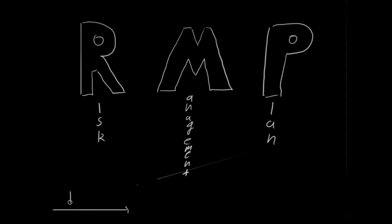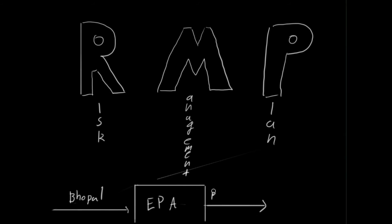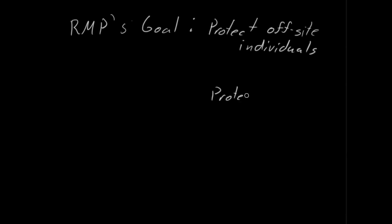The Risk Management Plan, or RMP, is the final rule published by the EPA. Like PSM, it was created in response to the Bhopal accident. This regulation is required for any plant that uses more than the specified threshold quantity of a highly hazardous chemical regulated by the EPA. RMP is like the PSM, but it is intended to protect off-site people affected from chemical releases, as opposed to on-site.